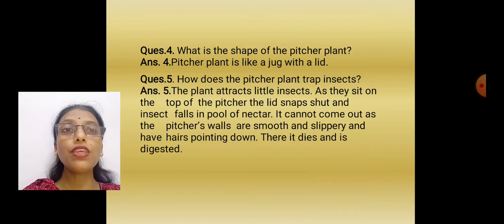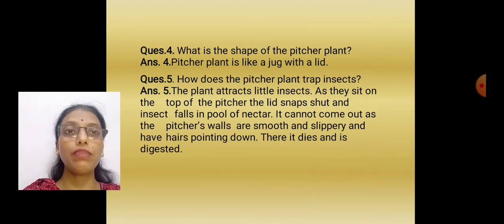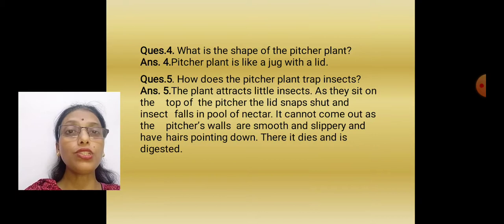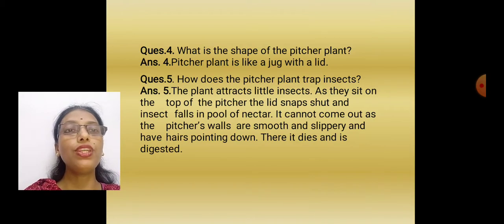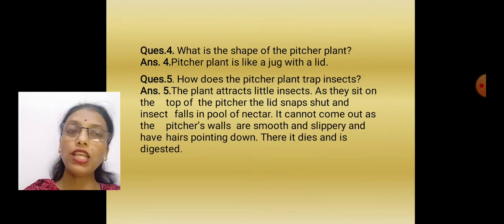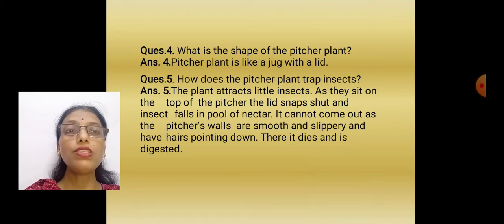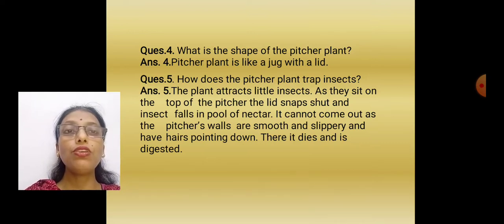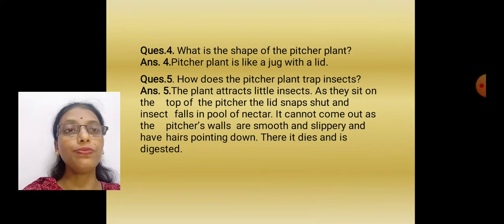Question number 5: How does the pitcher plant trap insects? The plant attracts little insects. As they sit on the top of the pitcher, the lid snaps shut. The insect falls into a pool of nectar at the bottom. The insect tries to come out but cannot, as the pitcher walls are smooth and slippery and have hairs pointing down. Those are the two reasons why the insect cannot come out. There it dies and is digested by the plant.